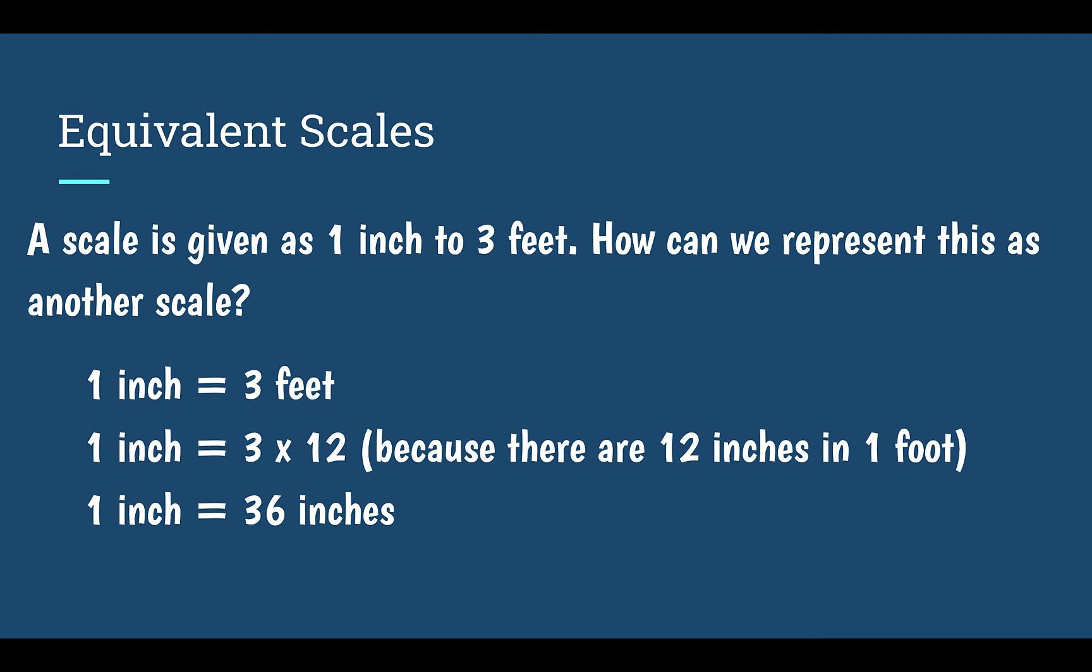So the same scale written differently is 1 inch is equal to 36 inches. Now, because they have the same unit, we could also get rid of that unit and say that our scale is 1 to 36. And now that we are able to get rid of the unit, we can change it into anything we want because now we know without units, the two have the same unit. So if I wanted to say 1 mile to 36 miles, I could do that. 1 meter to 36 meters, I can do that.